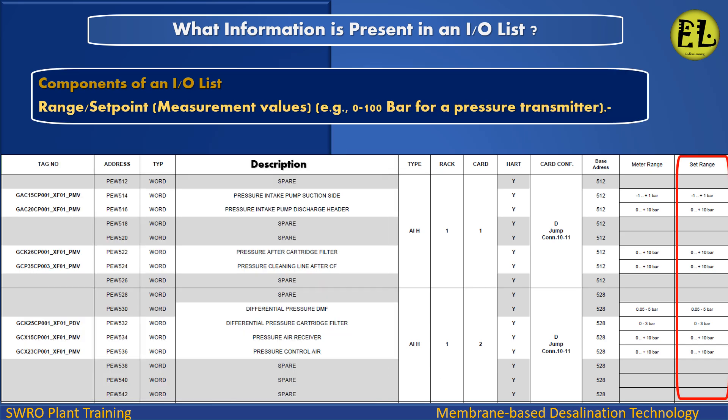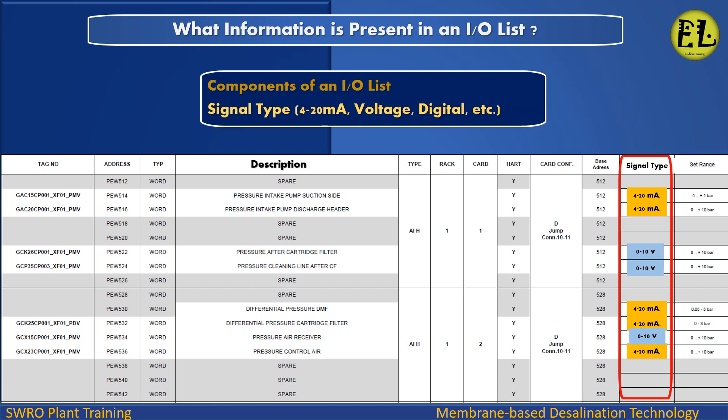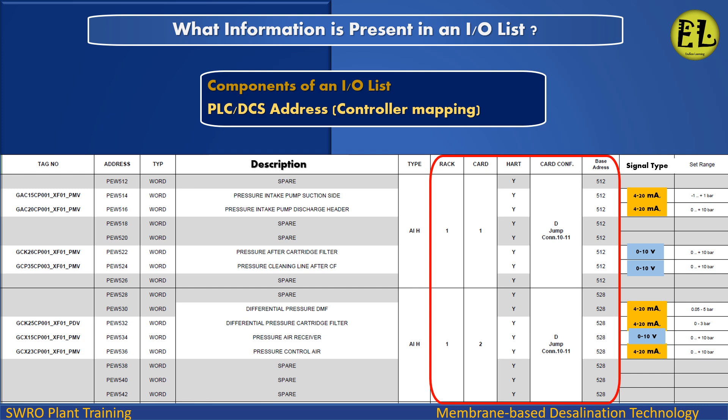Range / Setpoint: the measurement values, for example 0 to 100 Bar for a Pressure Transmitter. Signal Type: 4–20 mA, Voltage, Digital, etc. PLC / DCS Address: the controller mapping for each IO point.